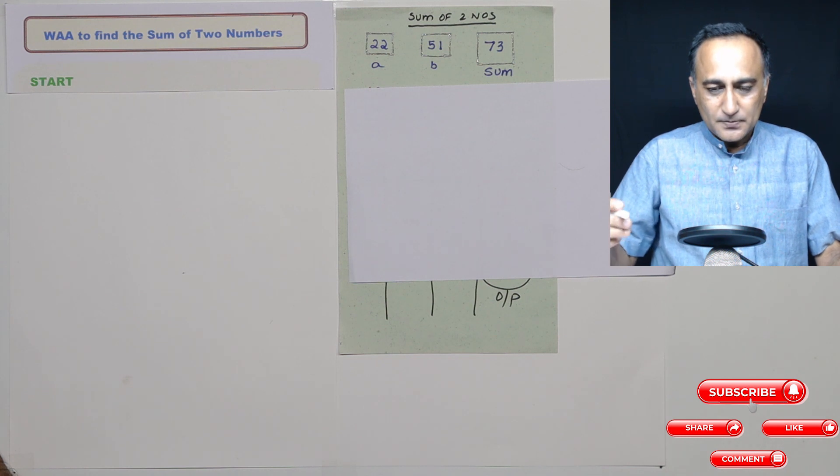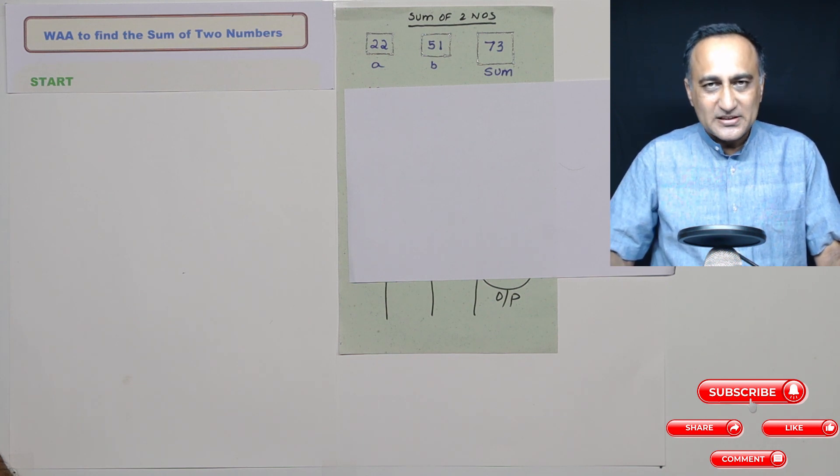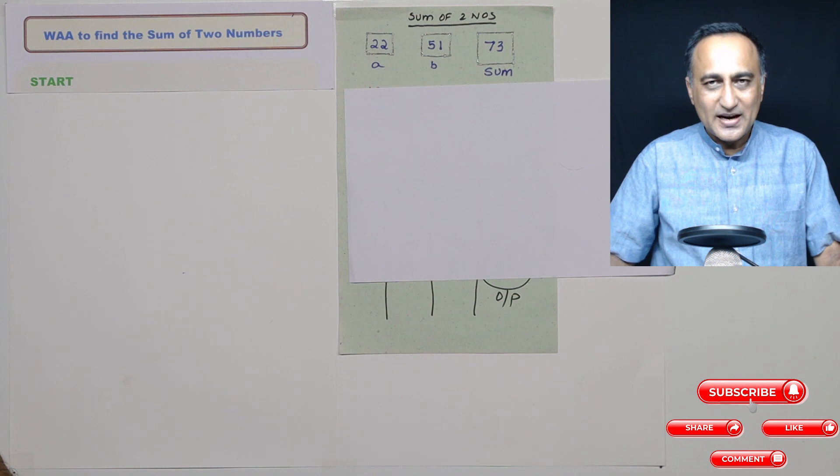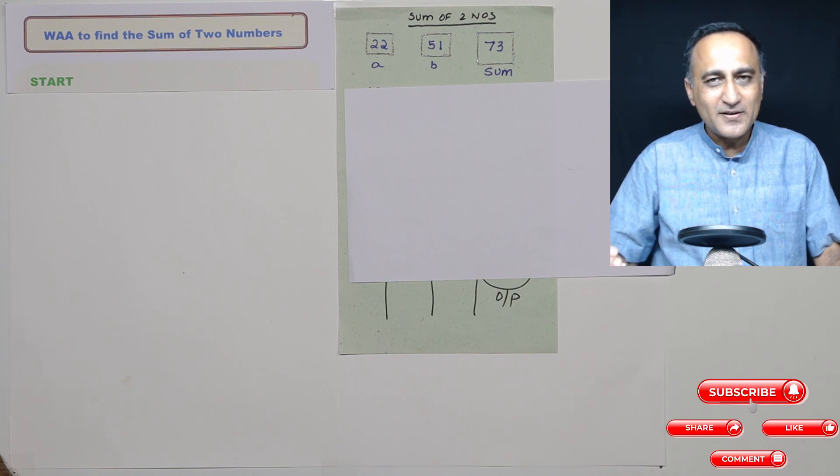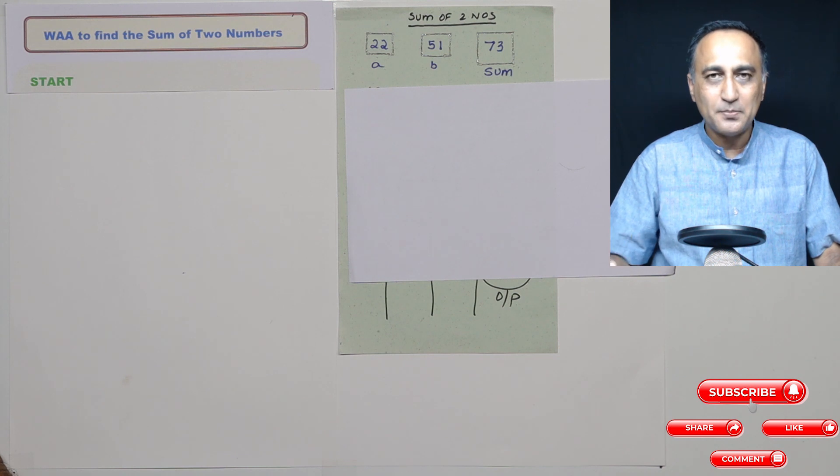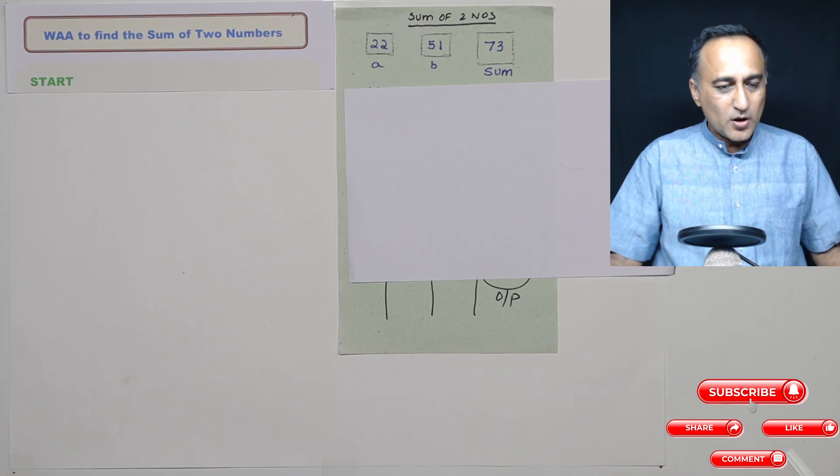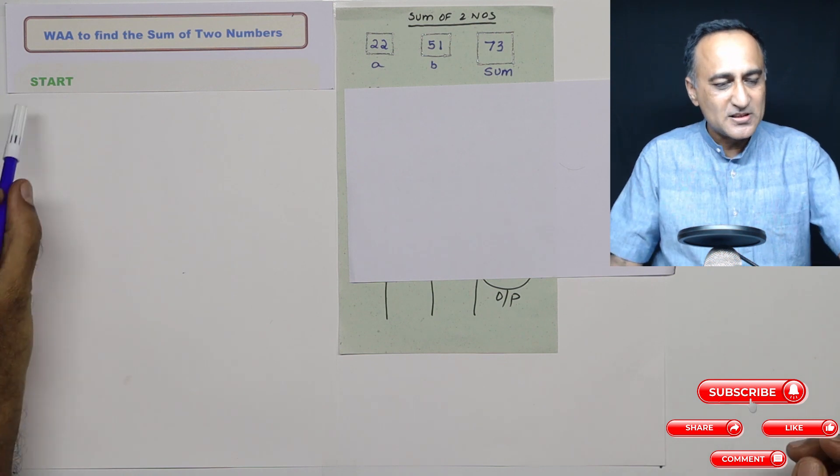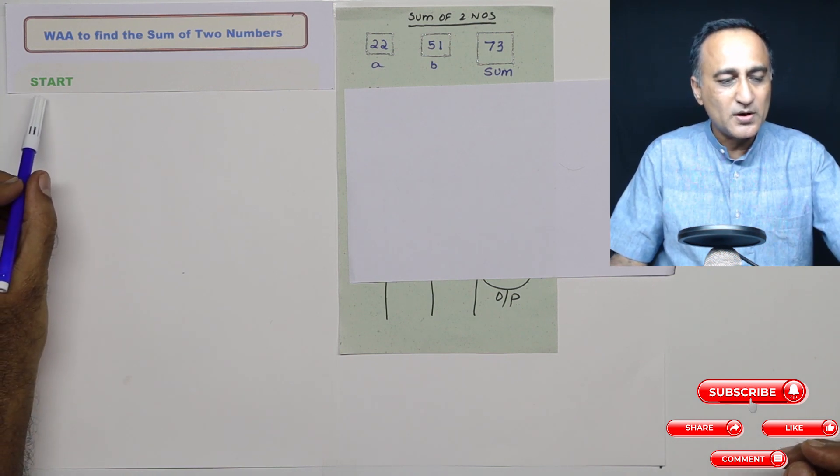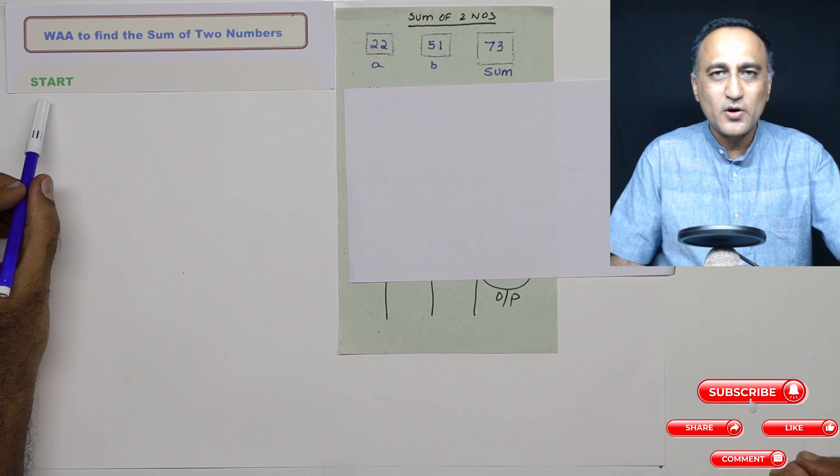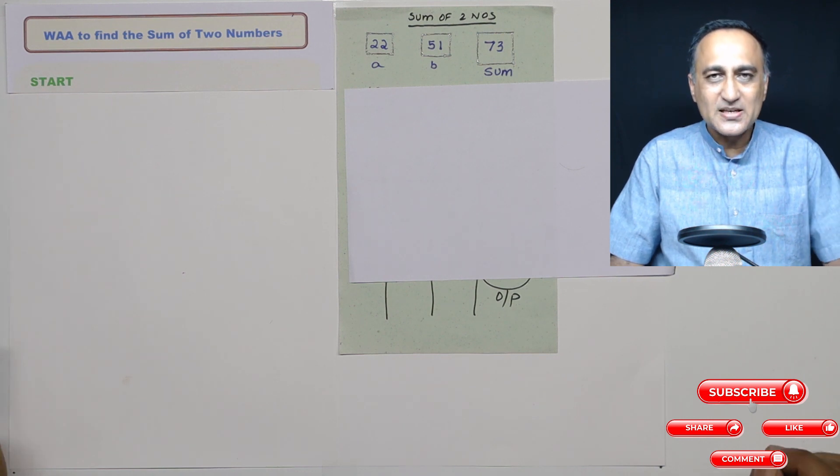Now, if you look at a computer, what it does is it takes input, does a process and produces an output. So if we have to write an algorithm to find the sum of two numbers, we first need to define or read some numbers into two memory locations, namely A and B. So first, whenever you're writing any algorithm, the first step is always going to be the word start, you could have start or you could have the word begin. And the last step when you end an algorithm is the word stop or end.